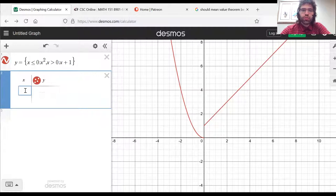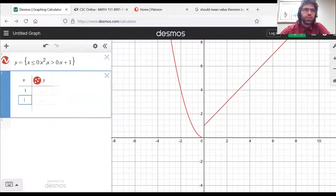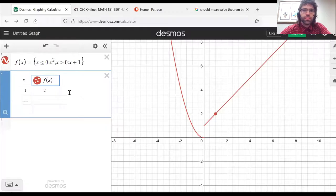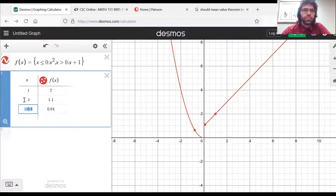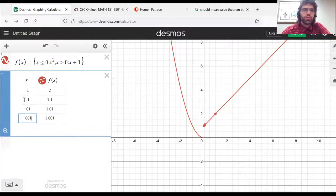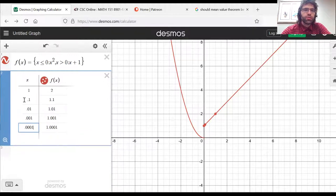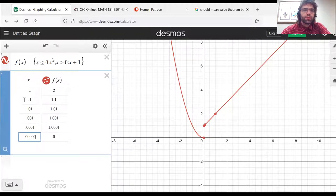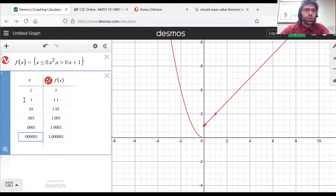So we'll approach zero. Let's say one, point one, point zero one, point zero zero one, point zero zero zero one, point zero zero zero zero zero one.